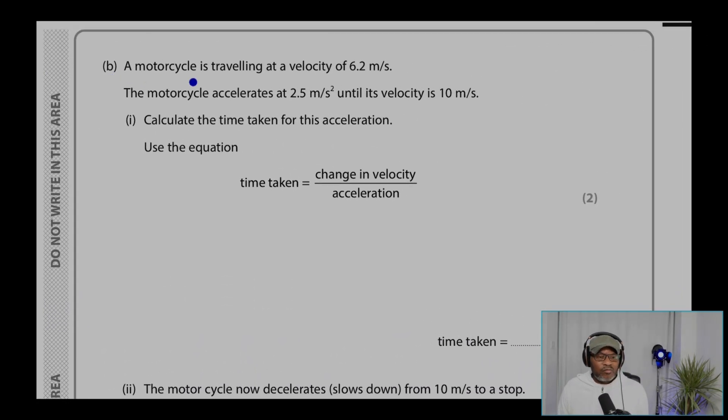Question 3B. A motorcycle is traveling at a velocity of 6.2 meters per second. The motorcycle accelerates at 2.5 meters per second squared until its velocity is 10 meters per second.